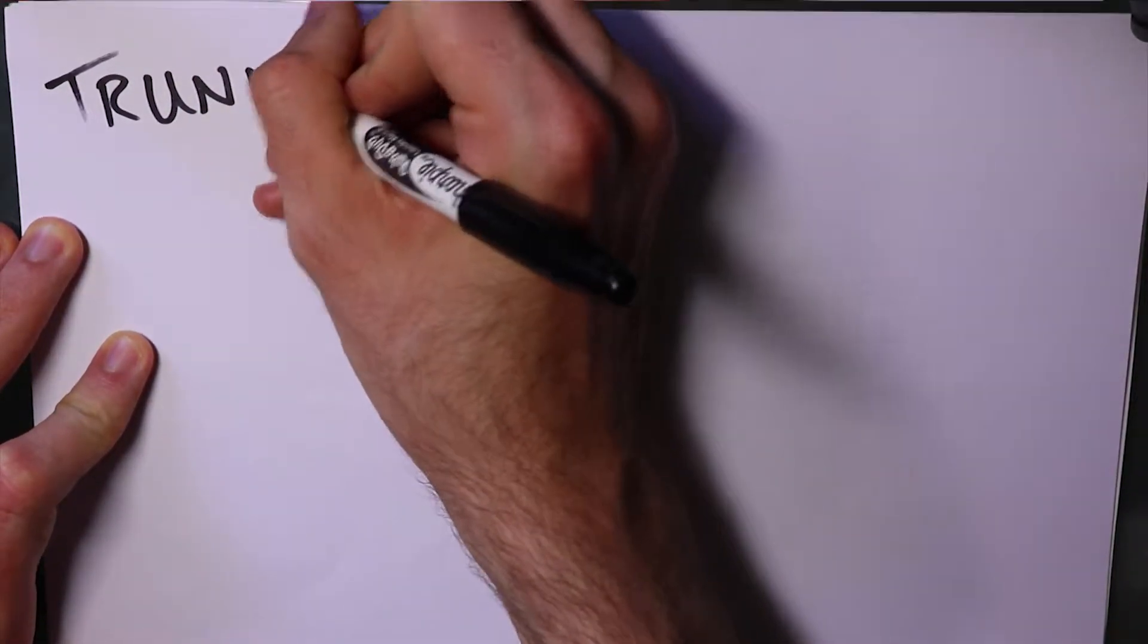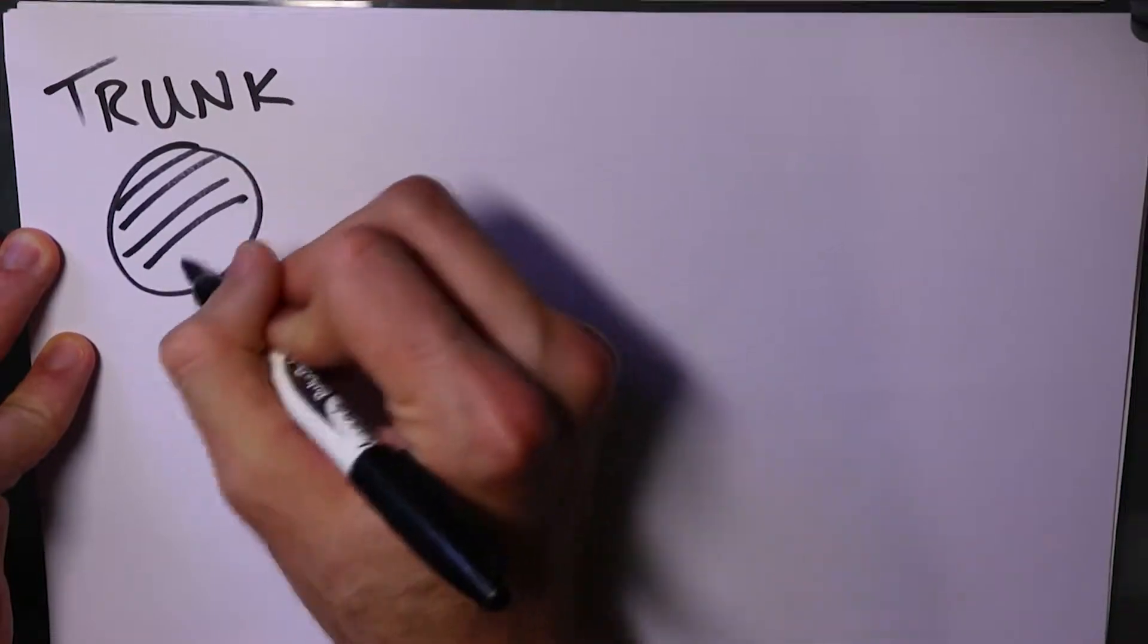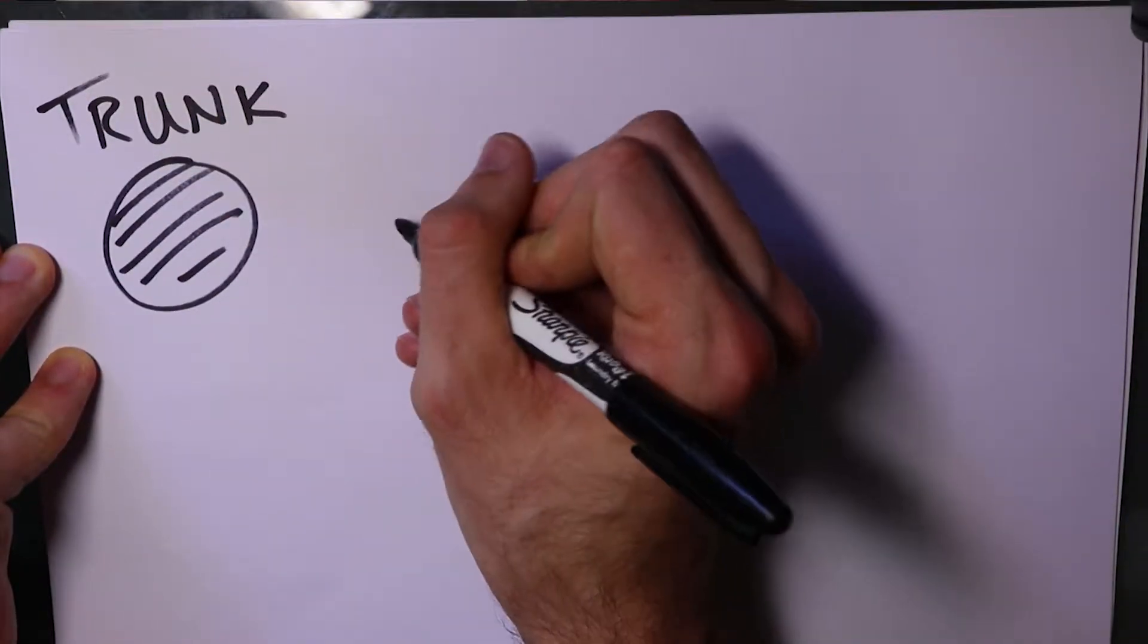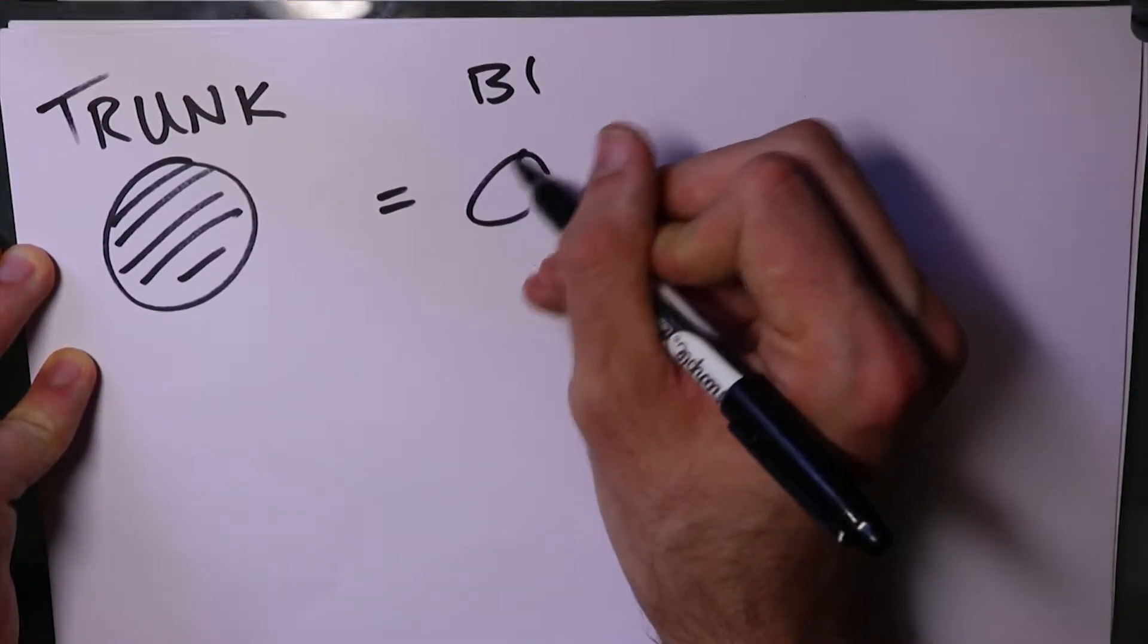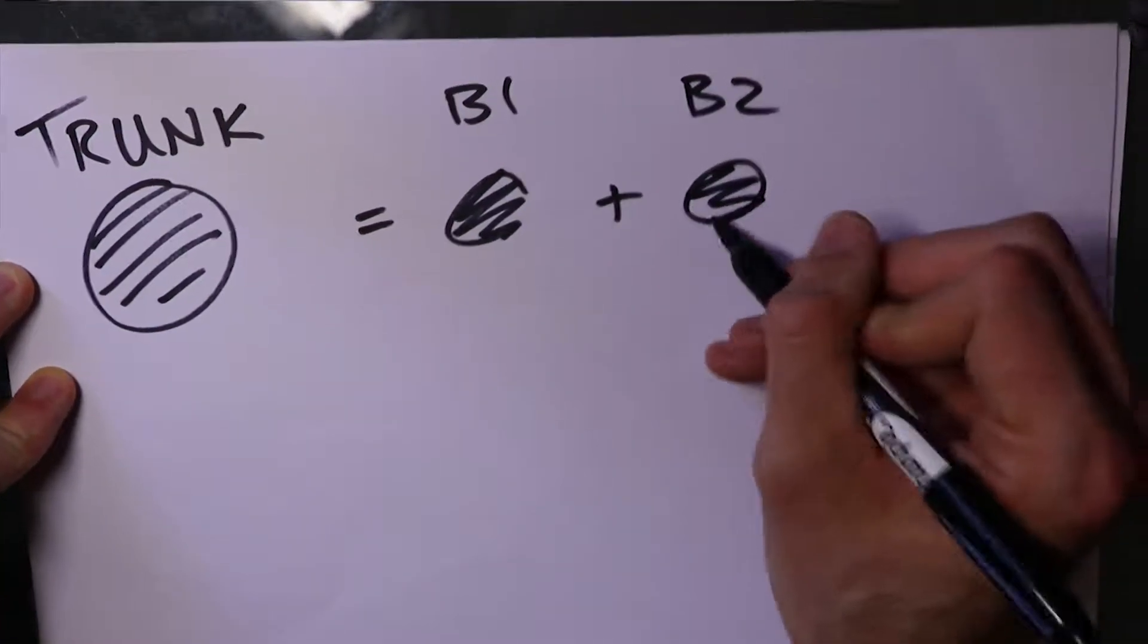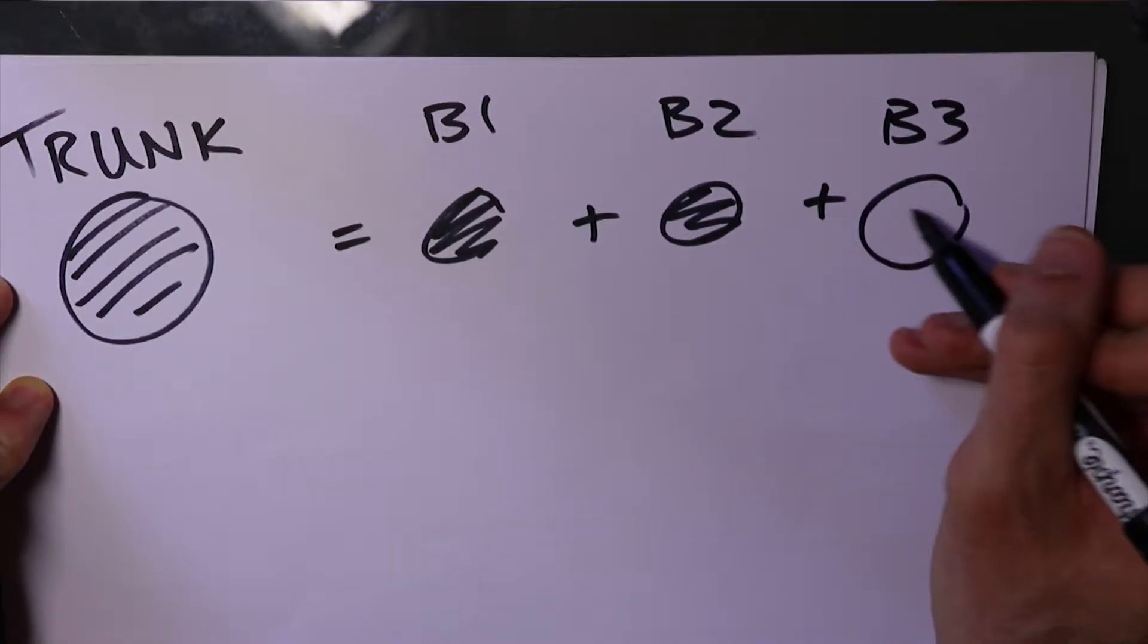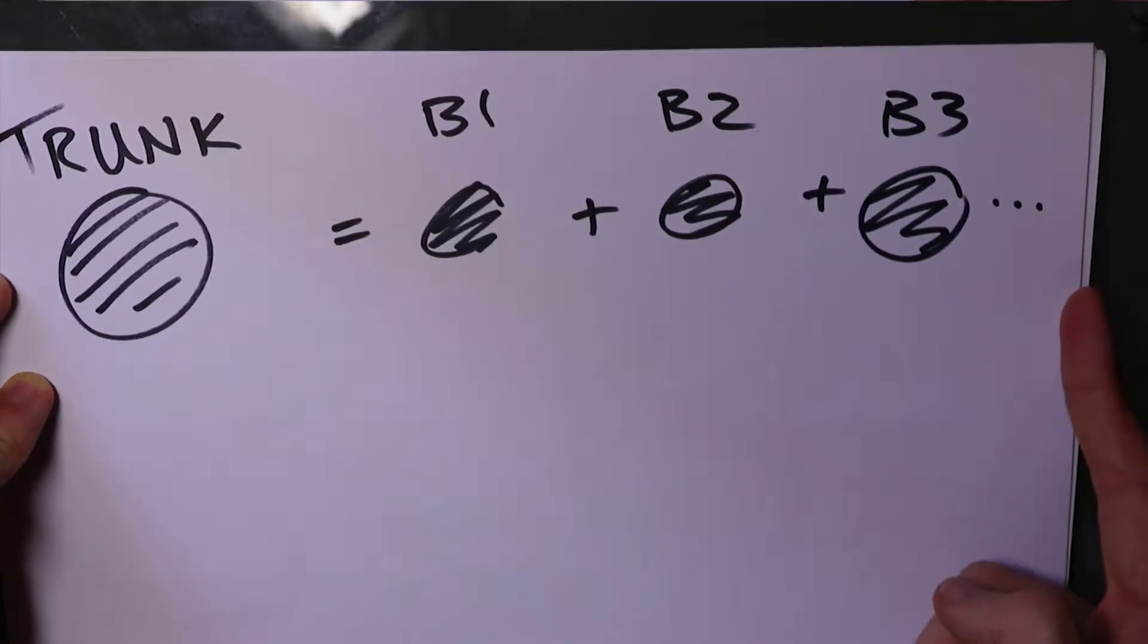Okay, so we're just going to say that this is the trunk over here. And now we're basically just saying that the area of the trunk equals branch one plus branch two plus branch three and so on. For all the branches at any height.